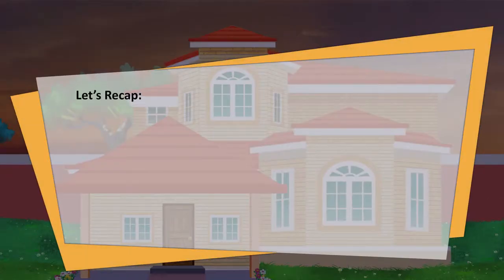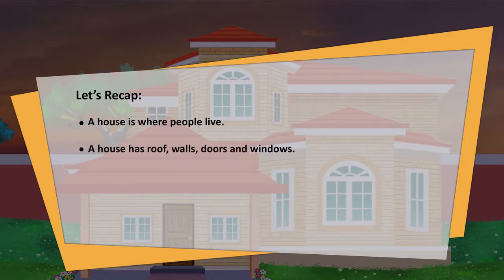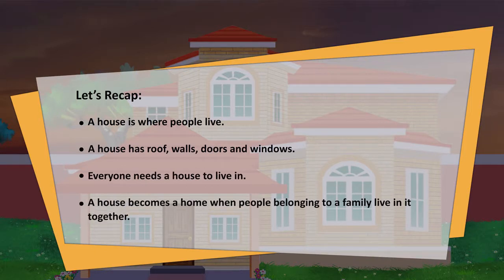Let's recap. A house is where people live. A house has roof, walls, doors and windows. Everyone needs a house to live in. A house becomes a home when people belonging to a family live in it together.